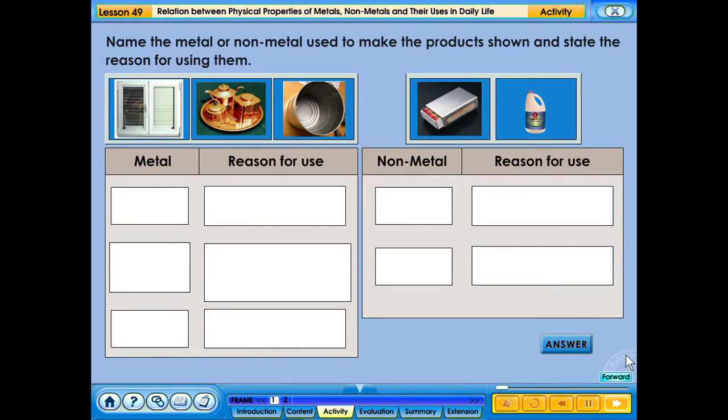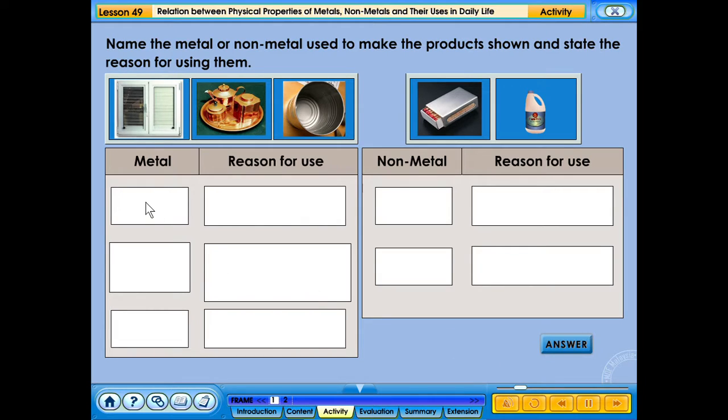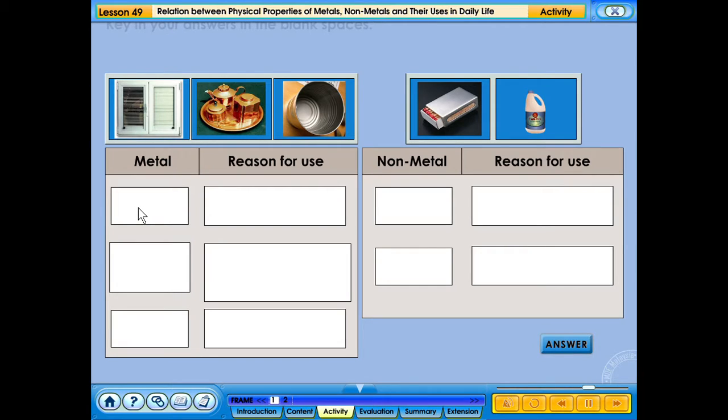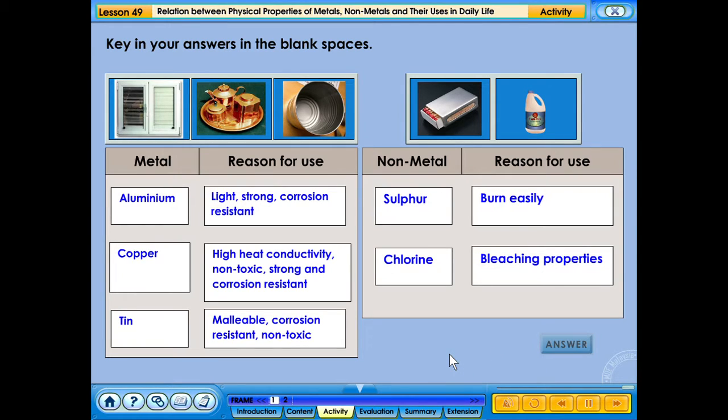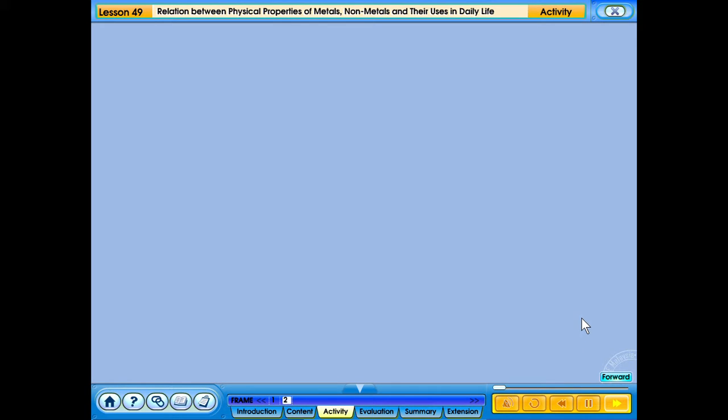Name the metal or non-metal used to make the products shown and state the reason for using them. Key in your answers in the blank spaces. Complete the crossword puzzle.